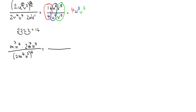In the numerator: there's a 1 in front, so 1 times 2 is 2. m to the third times m to the third — product rule — is m to the sixth. n to the fourth times n to the fourth is n to the eighth. On the bottom: 2 to the fourth is 16. m to the fourth times 4 — power of a power — is m to the sixteenth. n to the third times 4 is n to the twelfth.